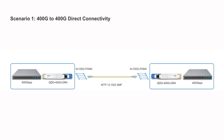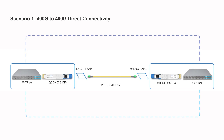The QDD 400G DR4 module employs 4x100G PAM-4 modulation technology, suitable for connecting to 400G switches with QDD ports. By using an MTP12 OS2 patch cable, you can easily interconnect two QDD 400G DR4 modules for switch-to-switch communication.